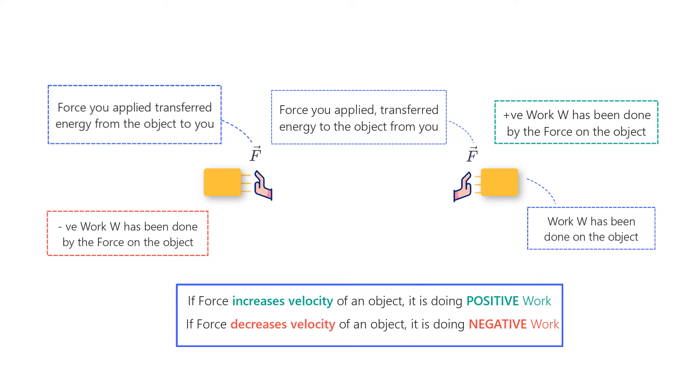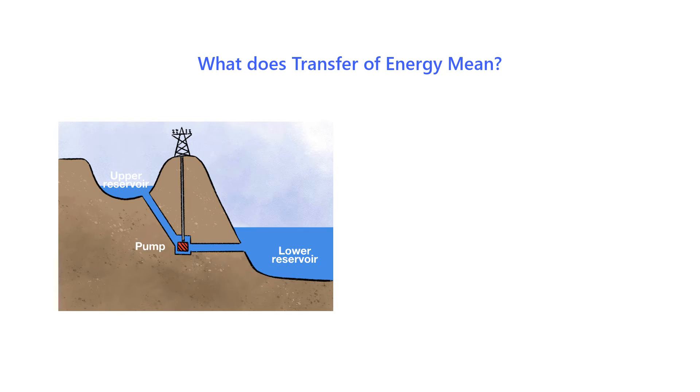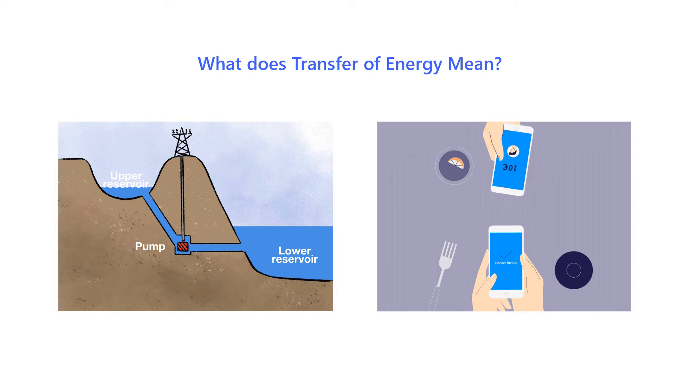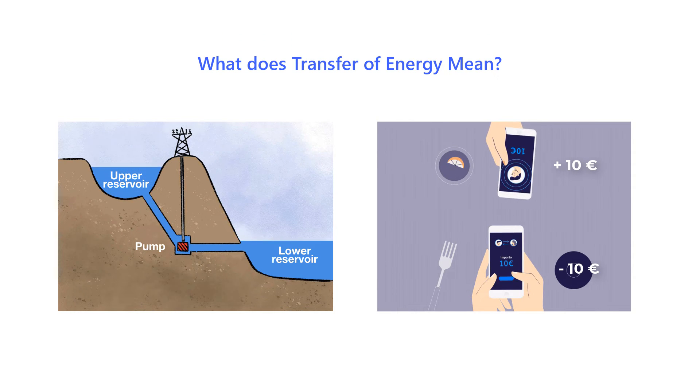Now, the term transfer of energy can be a little misleading. It does not mean that anything material or physical flows into or out of the object. That is, the transfer is not like a flow of water. A better way of explaining energy transfer would be that it is like the electronic transfer of money between two bank accounts. The number in one account goes up when you transfer money, while the number in the other account goes down with nothing physical passing between the two accounts.